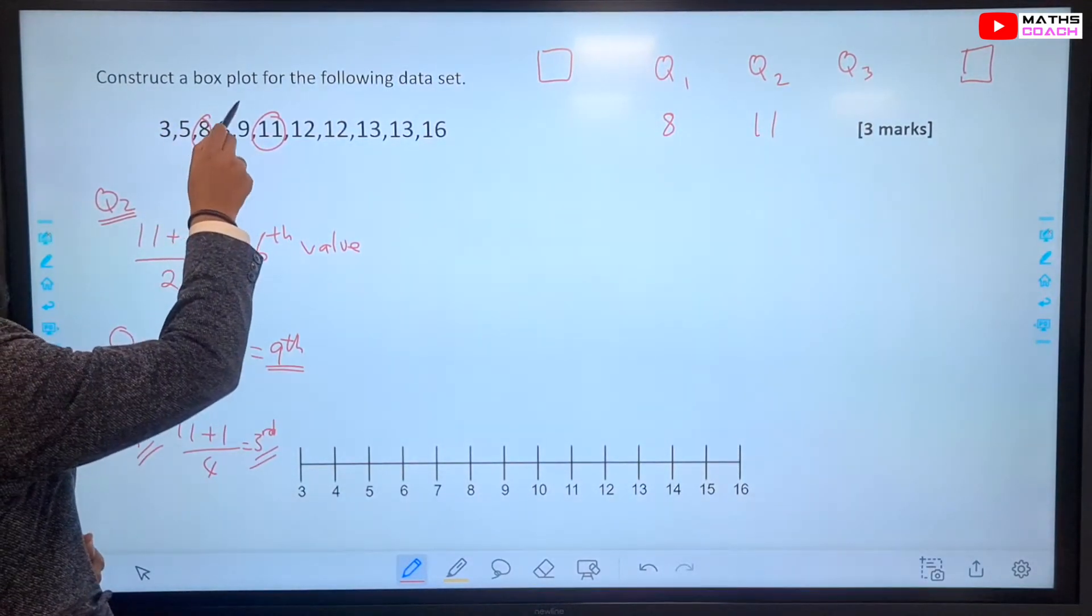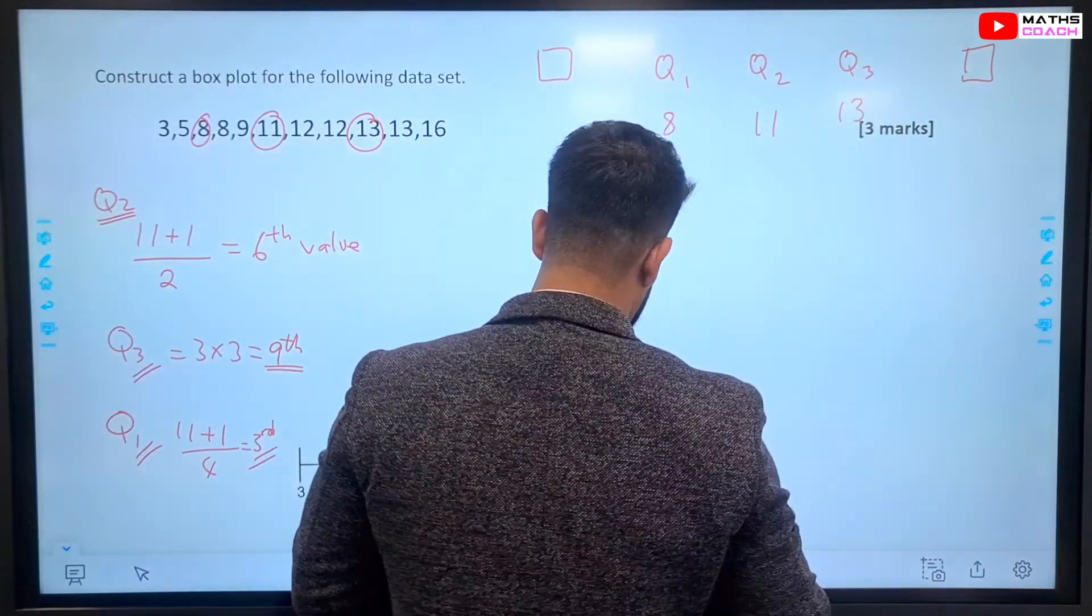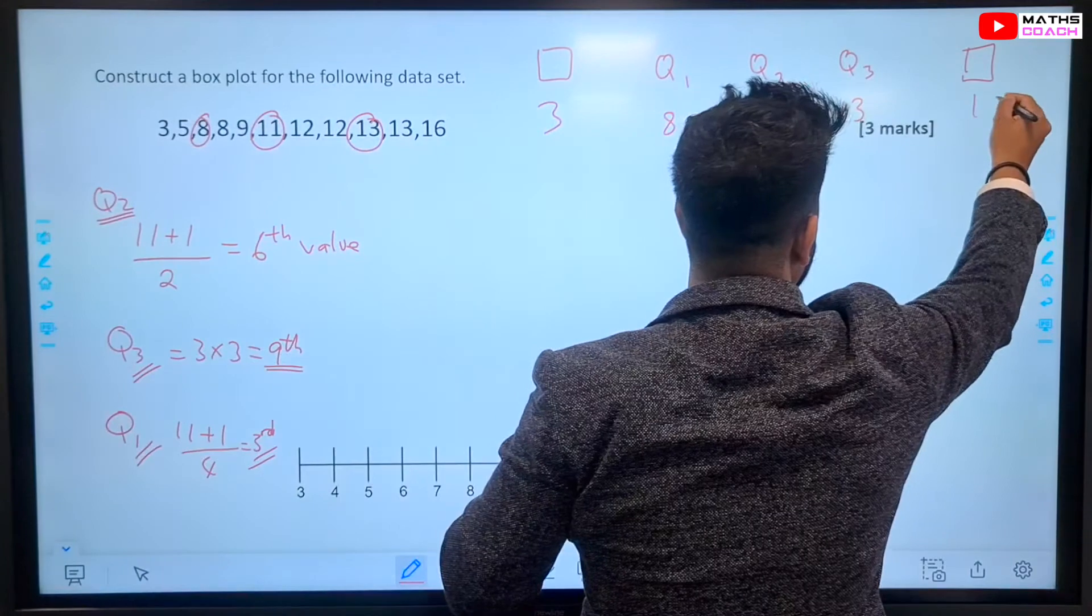So, 1, 2, 3, 4, 5, 6, 7, 8, 9, which is 13. So, the upper quartile is 13. And, of course, the lowest value is 3 and the highest value is 16.